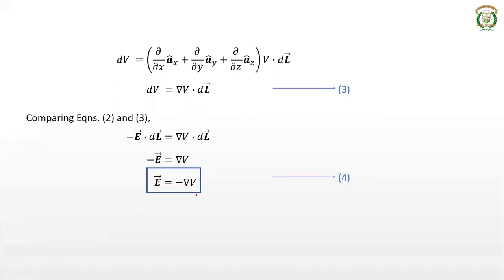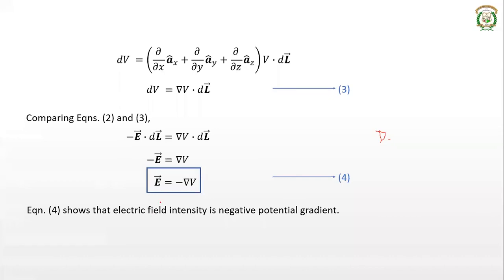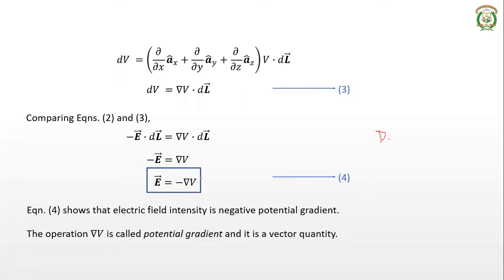The term ∇V is called the potential gradient. When you perform the del operation on a scalar quantity, you get its gradient. Del dot with a vector gives divergence; del applied to a scalar gives the gradient. So the electric field intensity equals the negative potential gradient. The potential gradient ∇V is a vector quantity because del is a vector operator acting on a scalar.